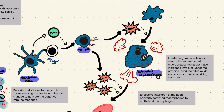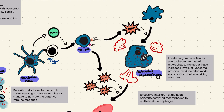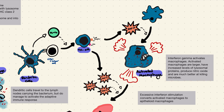Th1 cells produce interferon-gamma, which activates macrophages. Normally macrophages are quiescent — this is important because we don't want our immune system overreacting and causing unnecessary damage — but in this case the threat is serious, so macrophages are activated into highly aggressive, efficient bacteria-destroying machines. The numbers of bacteria start to drop and we begin winning the battle. At this stage, TB realizes it's losing, retreats, reduces its replication rate to avoid detection, and the body struggles to fully eliminate it.